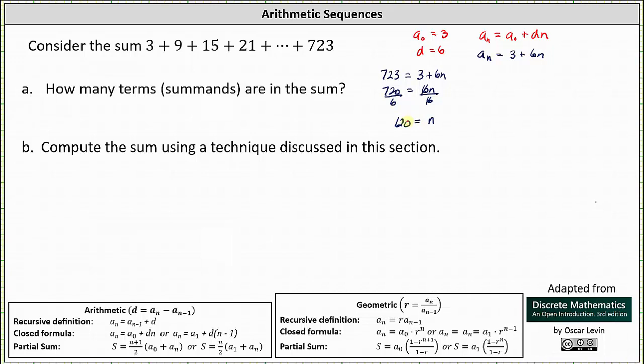Because the first term is a sub zero, this does not mean we have 120 terms. But we do know the first term is a_0, and now the last term is a_120, which means there are 121 terms in the sum. If the first term was a_1 and the last term was a_120, there would be 120 terms. But again, there's one more term because the first term is a_0. So again, the sum has 121 terms.